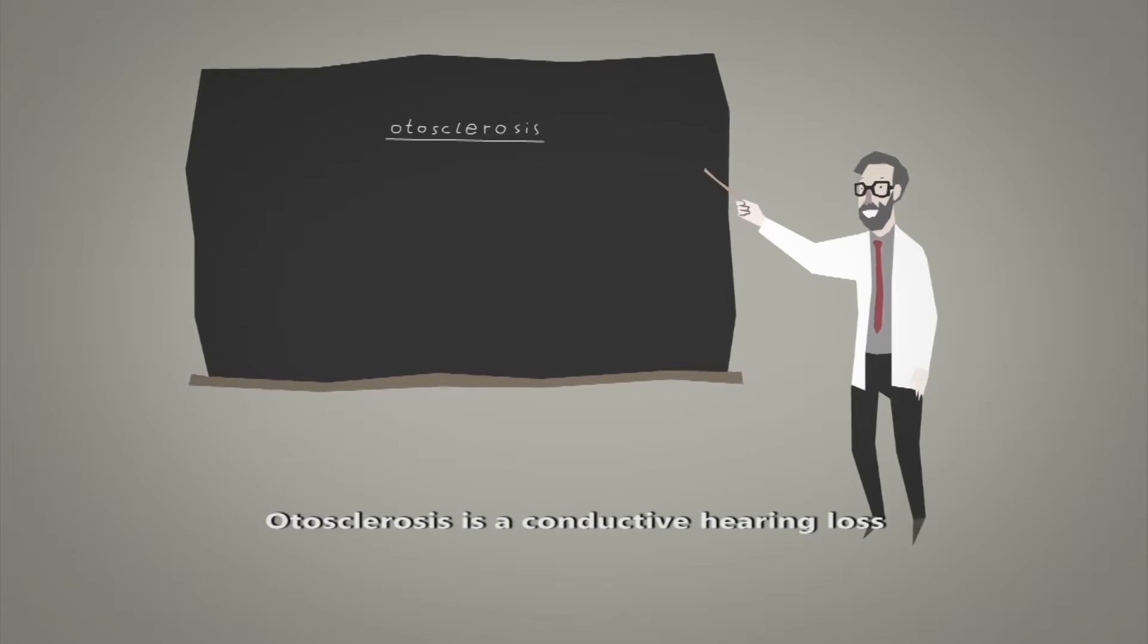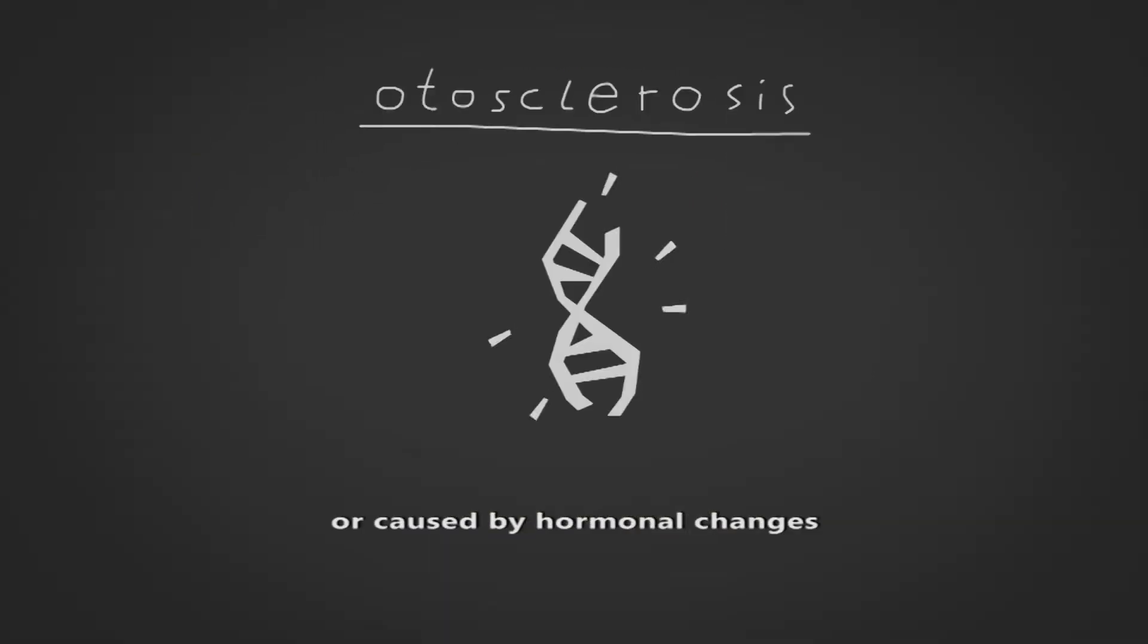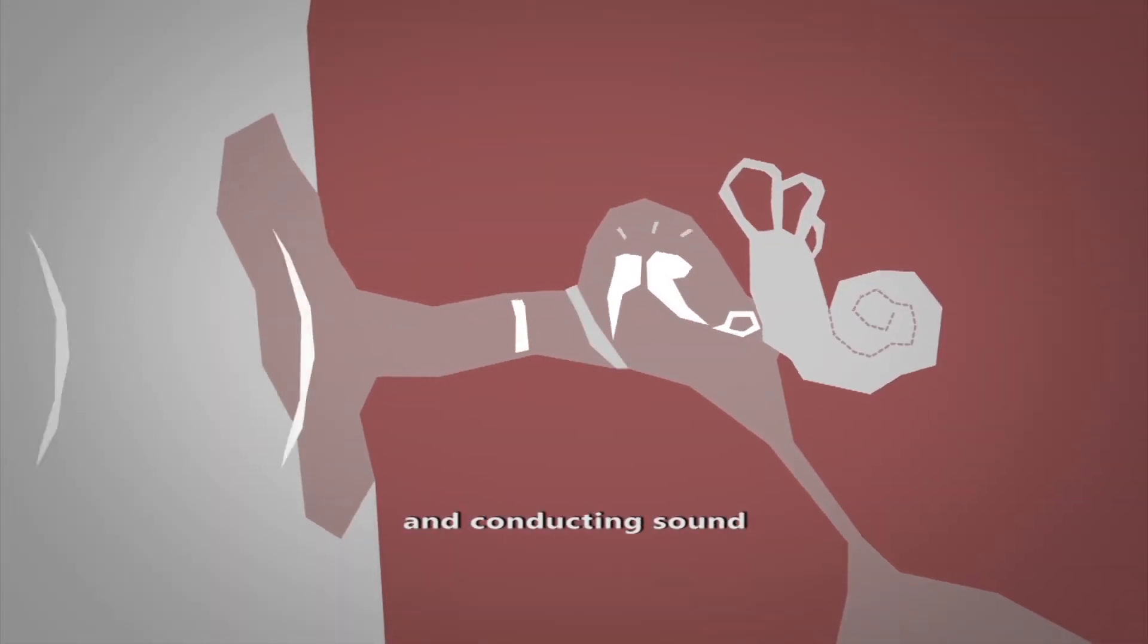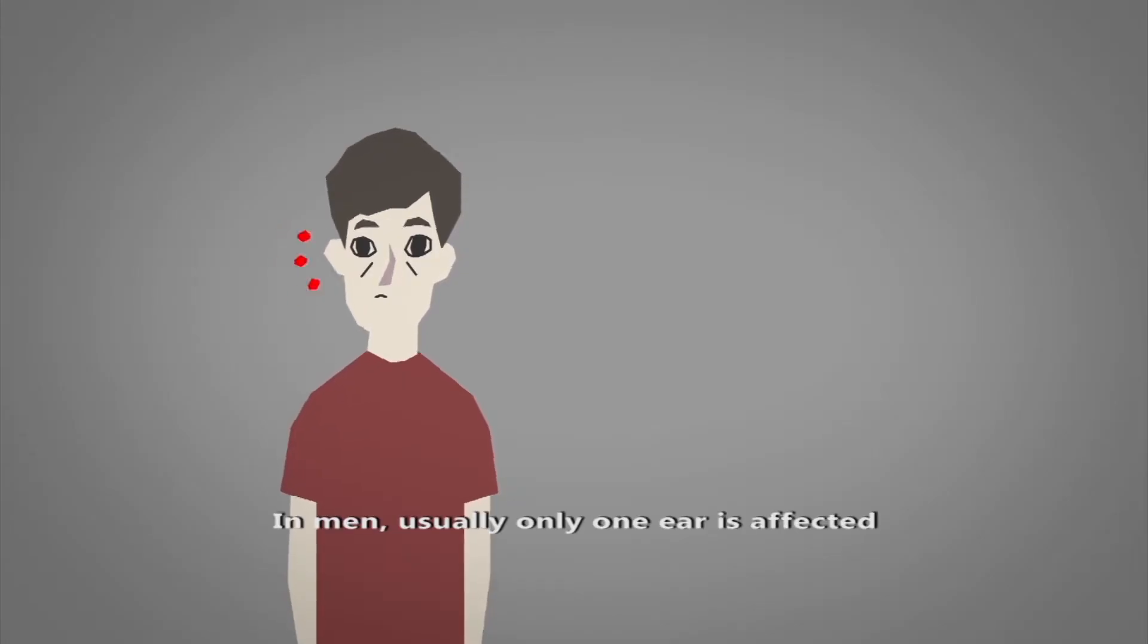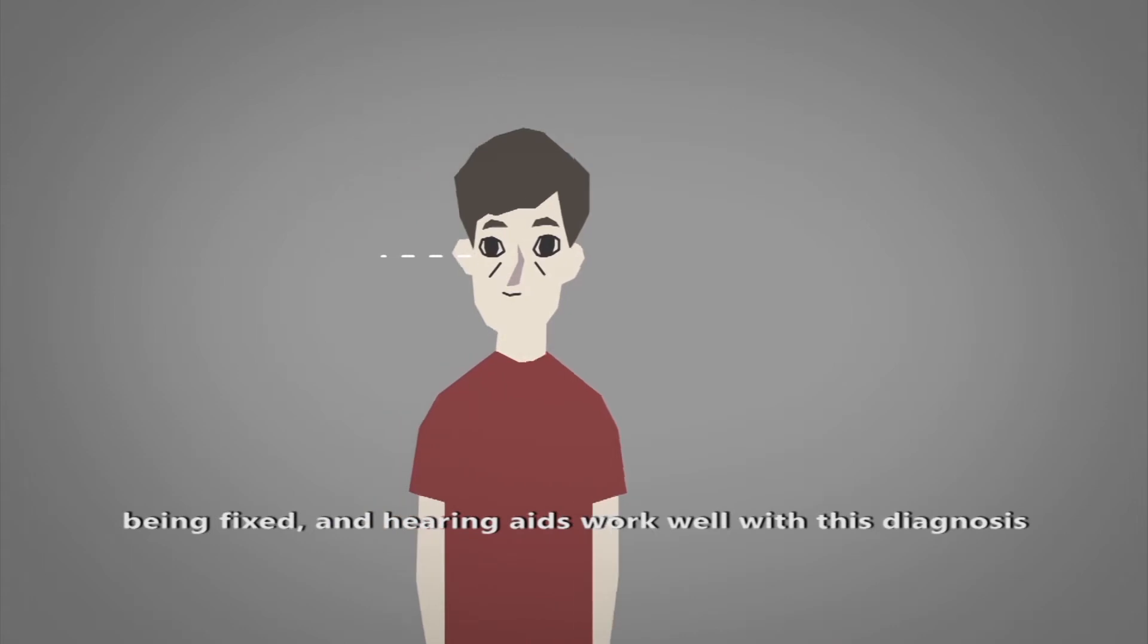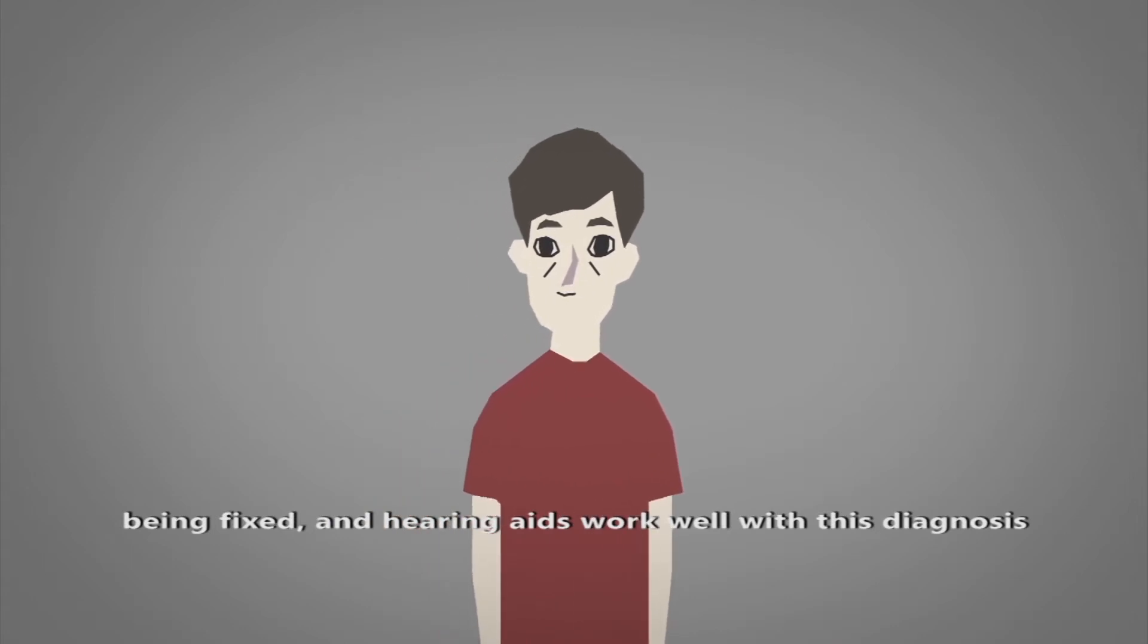Otosclerosis is a conductive hearing loss in the middle ear. It may be hereditary or caused by hormonal changes. A bone may become infected and enlarged, causing the bones to stop vibrating and conducting sound. In men, usually only one ear is affected. In women, usually both. There is a 50% chance of conductive hearing loss being fixed and hearing aids work well with this diagnosis.